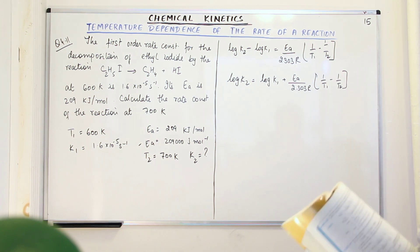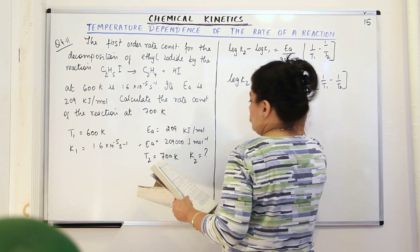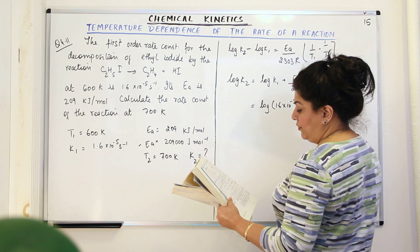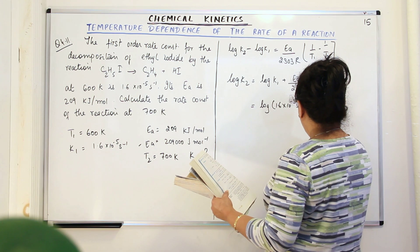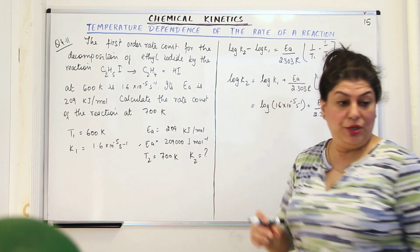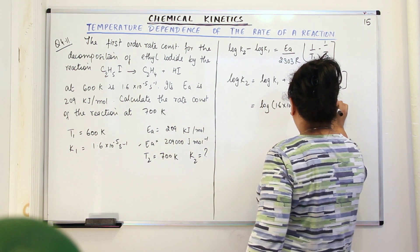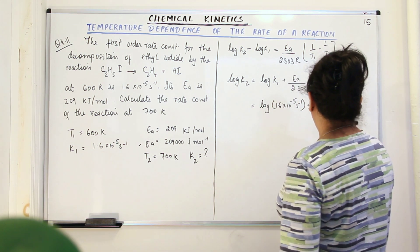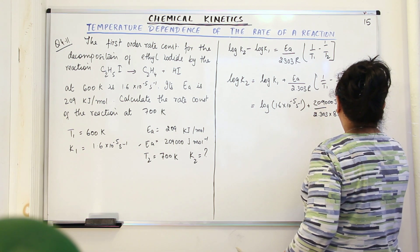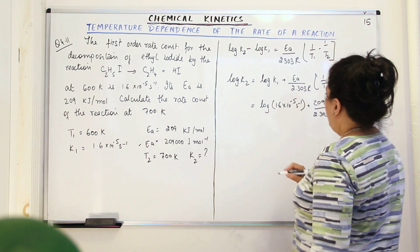Now substitute all the values. When you substitute all the values, what will you get? Log 1.6 into 10 to the power minus 5 per second is K1. So per second is only the unit, so you find only the log of the numerical value. Plus Ea upon 2.303. And what is the value of Ea? Ea is equal to 209,000 joules per mole. And 2.303 into R is 8.314 joules per mole per kelvin into 1 upon 600 minus 1 upon 700.